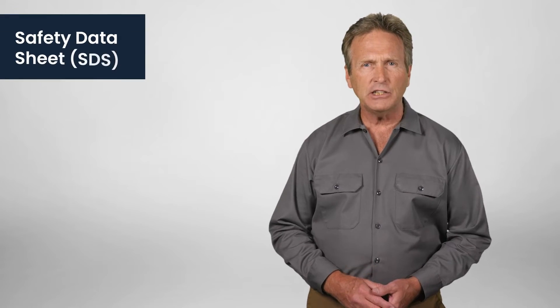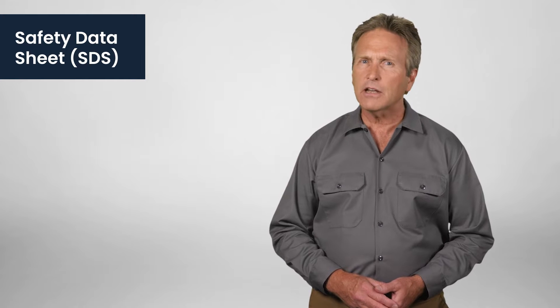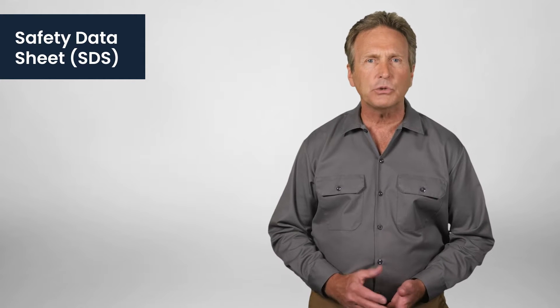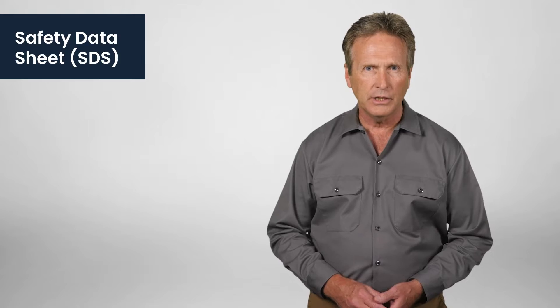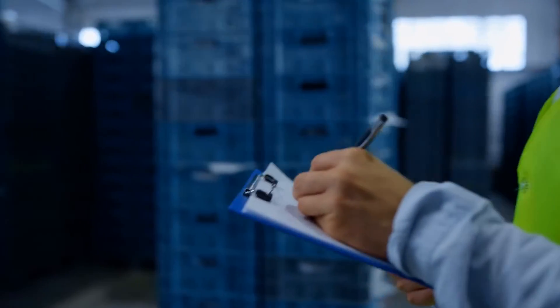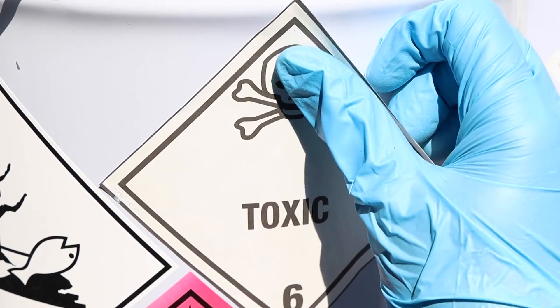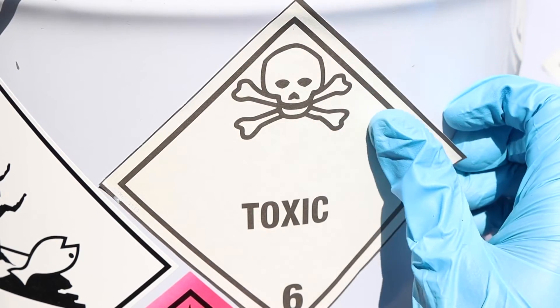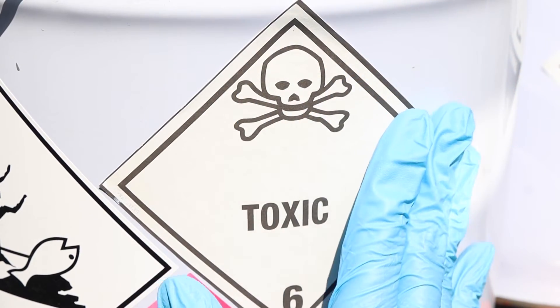A safety data sheet, or SDS, is like a comprehensive guide to a chemical's properties, risks, and safety measures. These entities must also ensure each container shipped out carries a GHS label — an essential, visible tool that plays a key role in workplace safety. While the rest of this training will primarily focus on GHS labels, you can learn more about safety data sheets in our other courses.